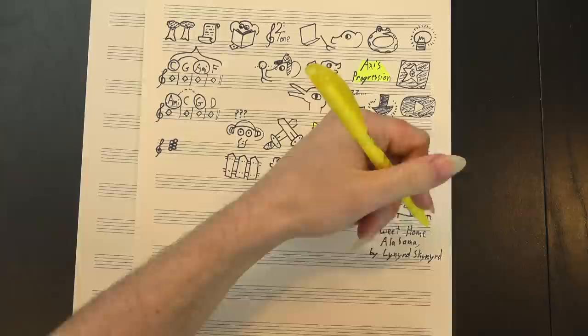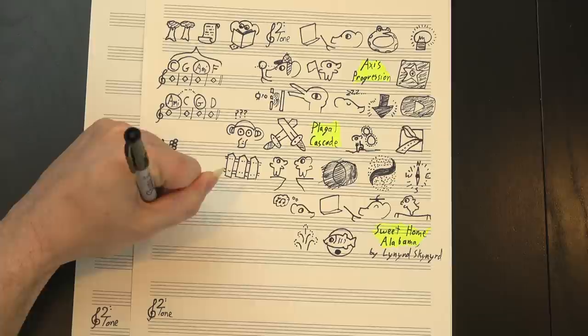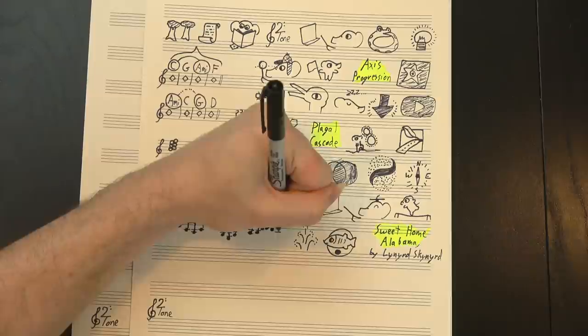And then there's Sweet Home Alabama. Adam Neely made a whole video on this, and I've mentioned it a couple times as well, but for some reason, whenever music theorists find a new way to think about keys, we always like to test it out on this song. The chord progression goes like this. To me, that looks like V, IV, I, in G, which is also the chord they spend the most time on.